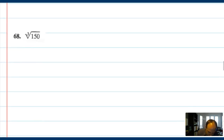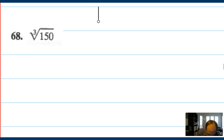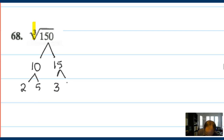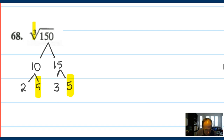Moving on to a cube root problem — our job is just to simplify and reduce. This feels like reducing square roots. Let me think about 150 and make a factor tree. Looking at the factor tree: if this were going to reduce, I would expect to see groups of three in the prime factorization. I do see two 5s, but I don't see a third 5 that would make this reduce nicely. So the cube root of 150 actually turns out not to reduce at all.